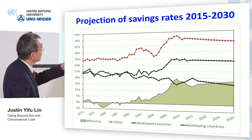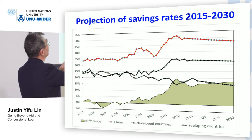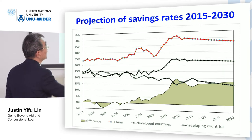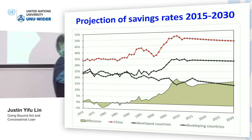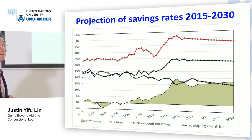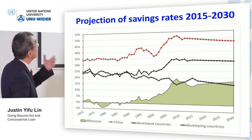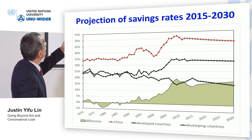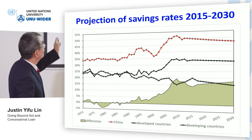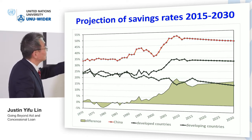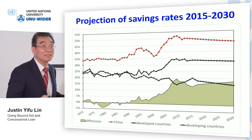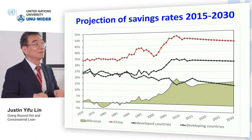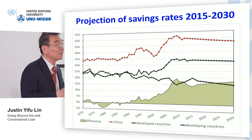But after 2000, developing countries' savings increased substantially while developed countries' savings declined substantially. Including China, the contribution of savings from developing countries by 2010 had already reached more than 50%, while developed countries' contribution dropped to about 15%. This means there will be more funding for supporting development coming from the emerging and developing world.